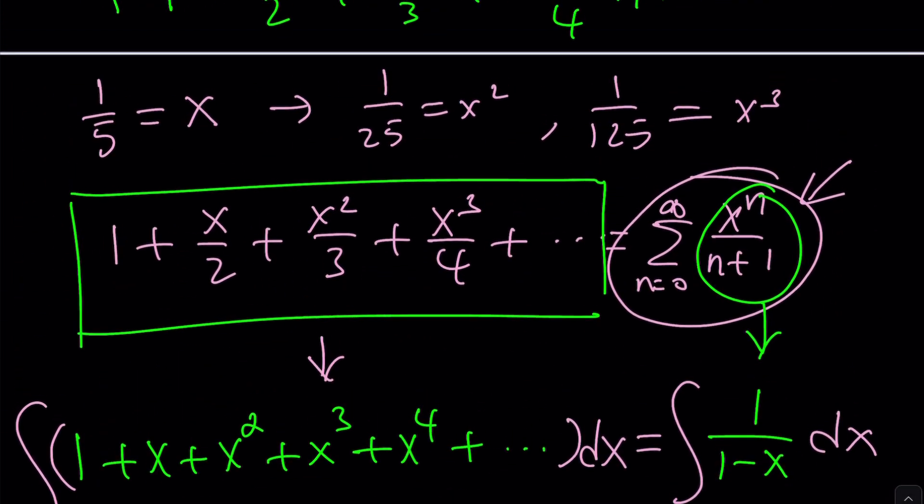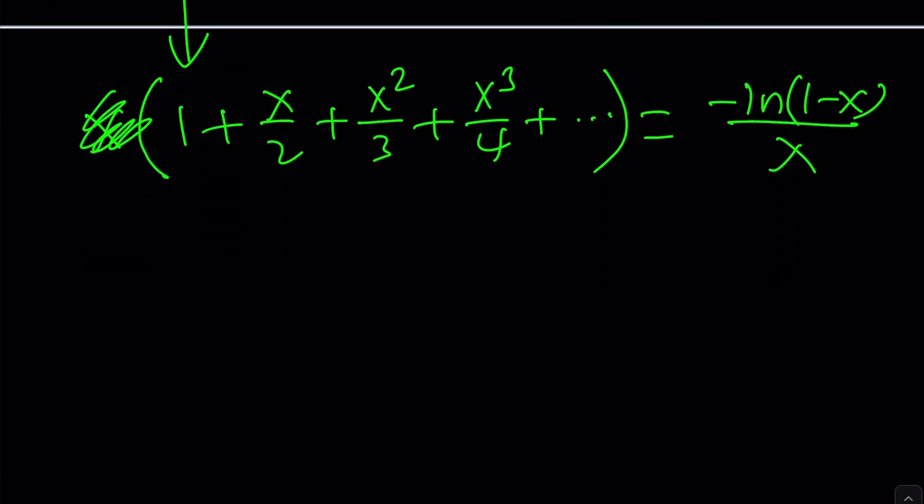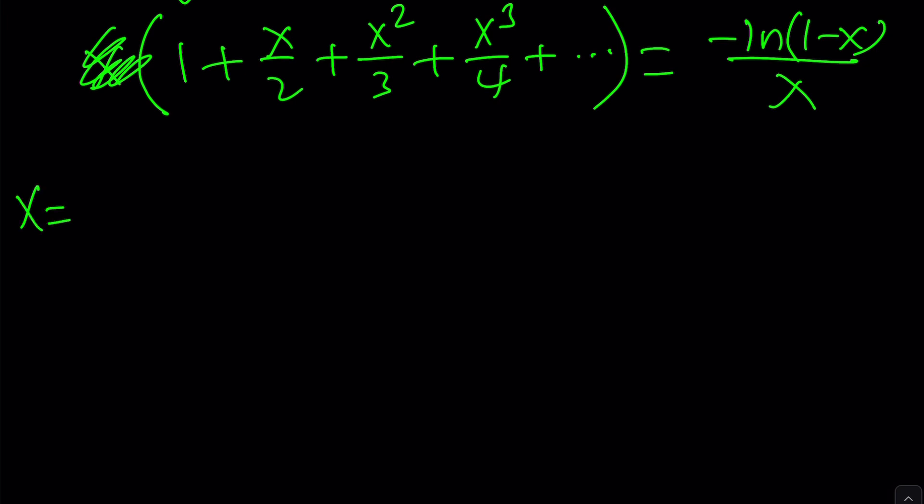But guess what? We're going to replace x with 1 over 5. That's the fun part. x equals 1 over 5. Since this converges because the geometric series converges, this is going to become 1 plus 1 over 5 times 1 over 2. Remember, that's 1 over 10. This is 1 over 75. This is 1 over 500. Exactly what I've been looking for.